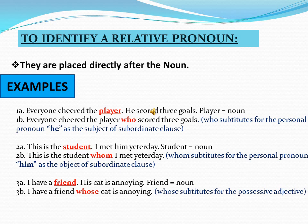Sentence 2A: 'This is the student. I met him yesterday.' In this sentence, 'student' is a noun. The combined sentence becomes: 'This is the student whom I met yesterday.' Here, 'whom' substitutes for the personal pronoun 'him' as the object. In sentence 2A, 'him' is an object, so we use 'whom.'